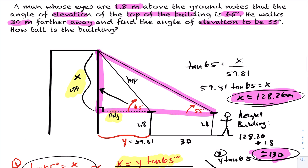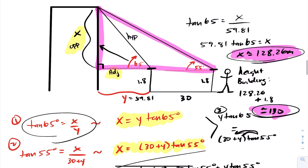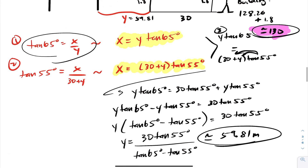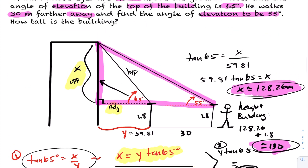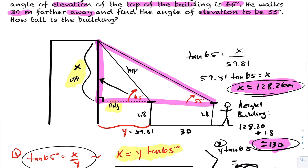Therefore, the total height of the building is 128.26 plus the 1.8-meter eye height, giving an approximate height of 130 meters. This is a pretty involved question with a lot of steps. Take a look at the diagram, see how it was constructed, review the math, and try the question yourself fresh before following along with the lesson.